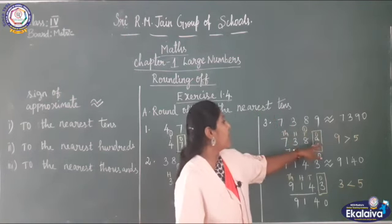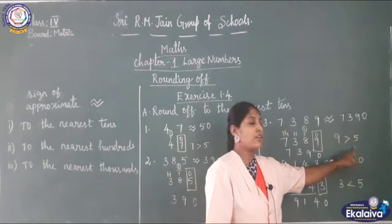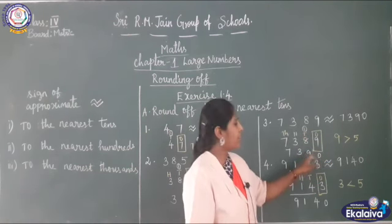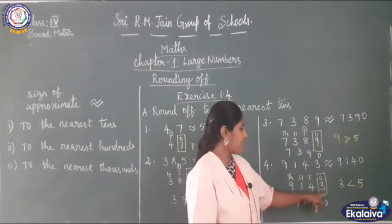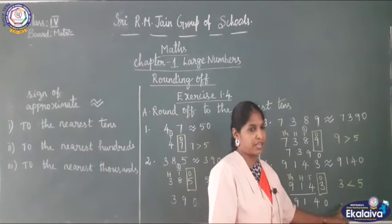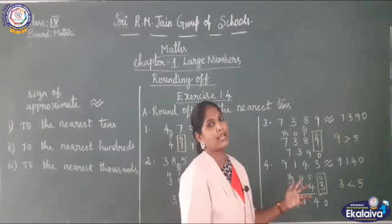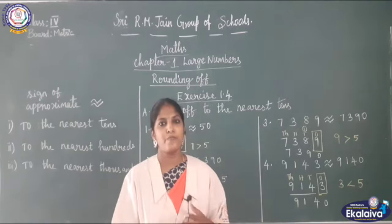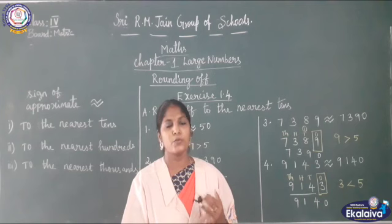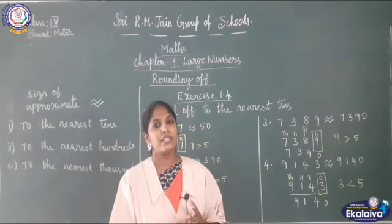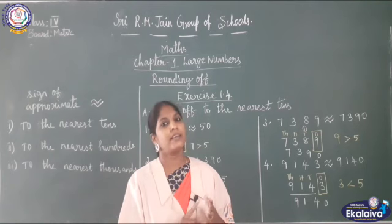Let me repeat the rule. When rounding off to the nearest tens, check the ones place. If it is 5 or greater than 5, add 1 to the tens place and write the remaining numbers as they are — always put 0 in ones place. If ones place is less than 5, put 0 in ones place and write the remaining numbers as they are. If ones place is 5 or greater than 5, put 0 in ones place, add 1 to the tens place, and write the remaining numbers.